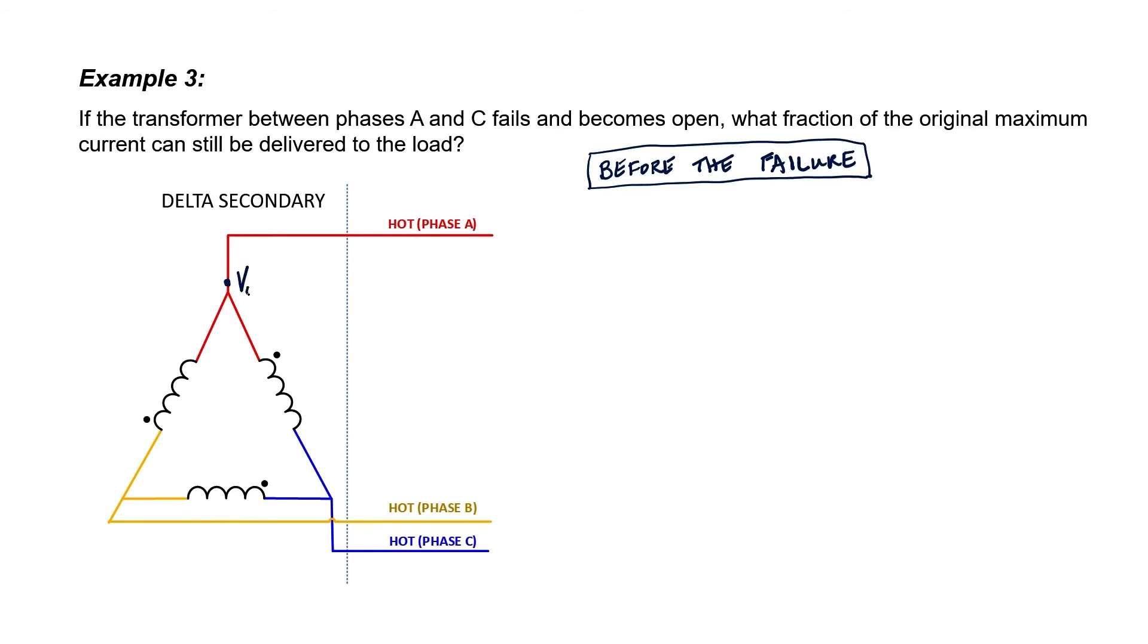Let's label some voltages here. We'll call this voltage Vout at an angle of zero degrees. We'll call the voltage over here the same thing at an angle of minus 120 degrees. And we'll call the voltage over here the same thing at an angle of plus 120 degrees. Let's now label the currents passing through each one of these transformers.